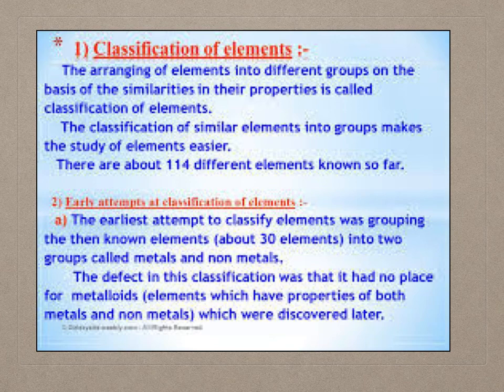The earliest attempt to classify elements was grouping the then-known elements — about 30 elements — into two groups called metals and non-metals. The defect in this classification was that it had no place for metalloids, which are elements that have clear properties of both metals and non-metals, and which were discovered later.